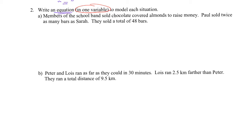The problem says members of the school band sold chocolate-covered almonds to raise money. Paul sold twice as many bars as Sarah, and they sold a total of 48 bars. The question asks us to write an equation to model the situation. The first thing we need to address is that if we're going to create an equation, it requires a variable — and if we're going to use a variable, we have to define it.